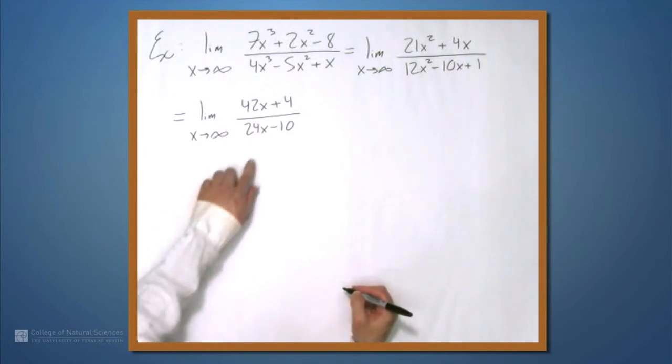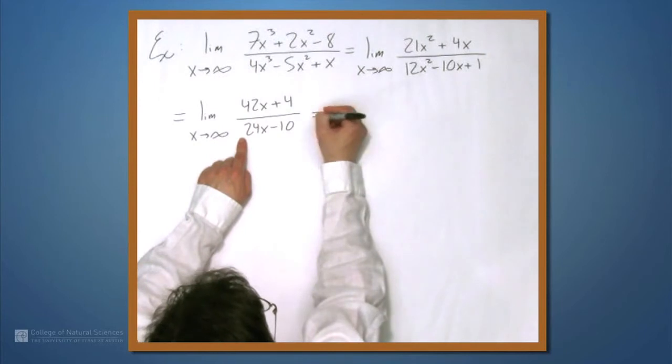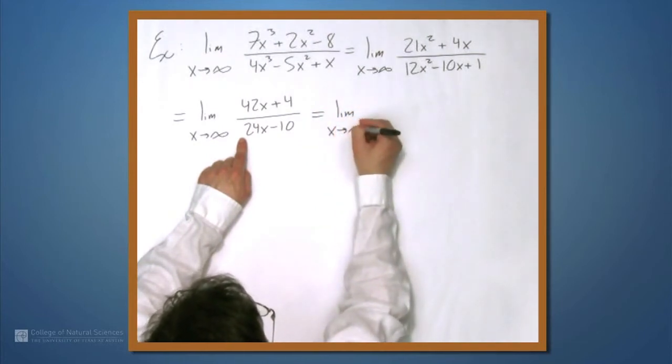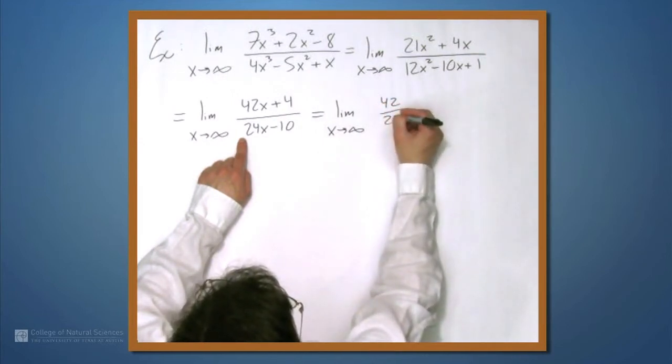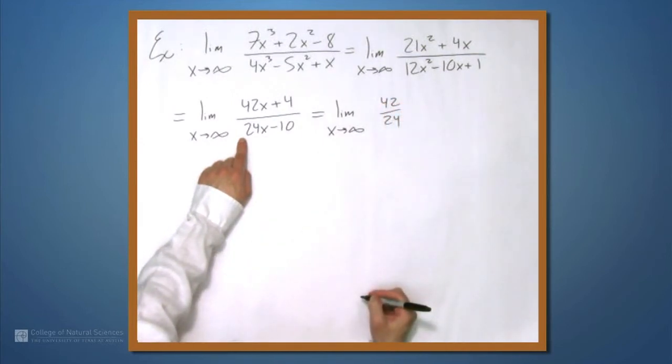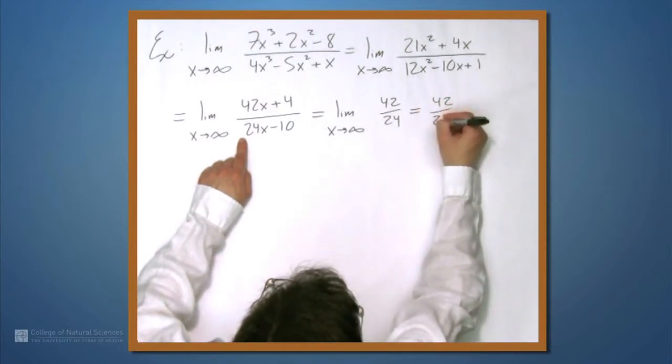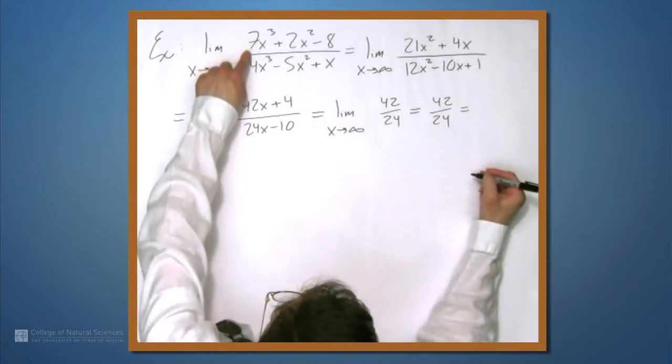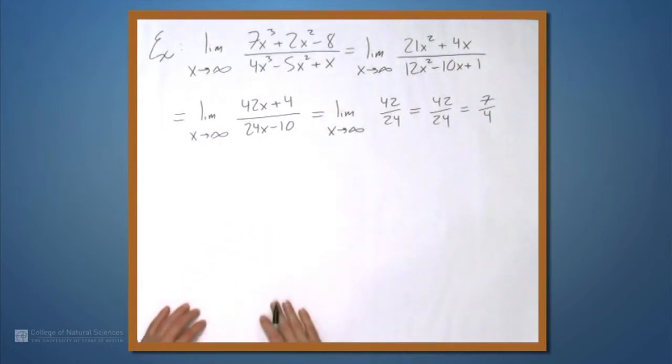And we get the limit as x approaches infinity of 42x plus 4 divided by 24x minus 10. And one last time, we have something going to infinity over something going to infinity. So one more L'Hopital's rule. Limit as x approaches infinity of 42 over 24. Well, this is just 42 over 24, which simplifies to what we knew the answer had to be 7 fourths.